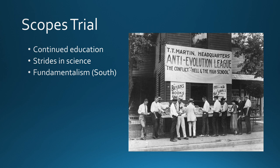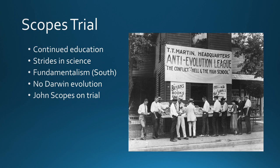At the same time, we saw a rise in fundamentalism in the South. These are people who are devoutly religious, believe religion is the fundamental basis of all society, and believe in the literal translation of the Bible. They felt strongly that Darwin's theory of evolution should not be taught in schools. In the 1920s South, fundamentalists were relatively strong. To pinpoint this divide between science and religion, a teacher from Tennessee named John Scopes went on trial because he taught evolution.